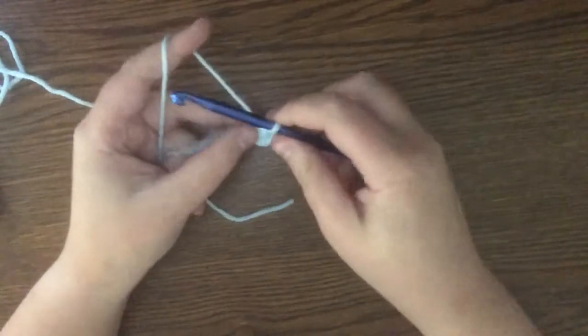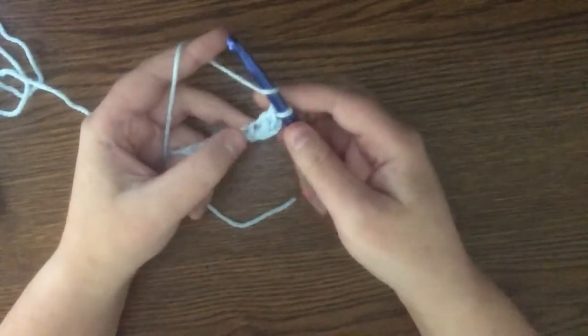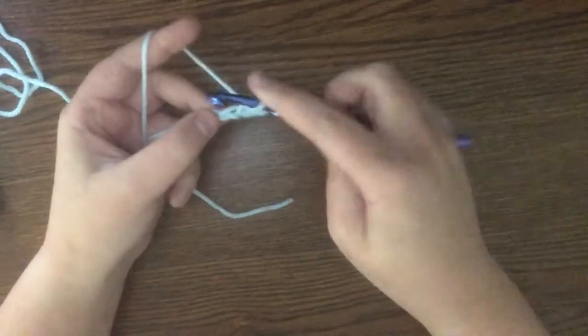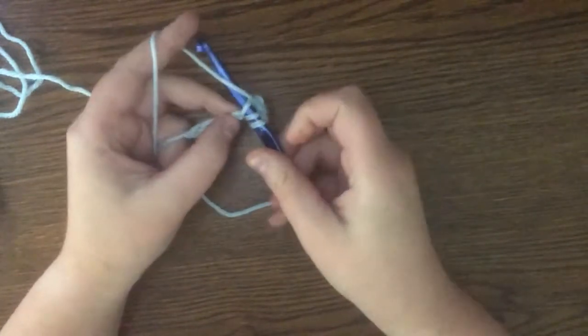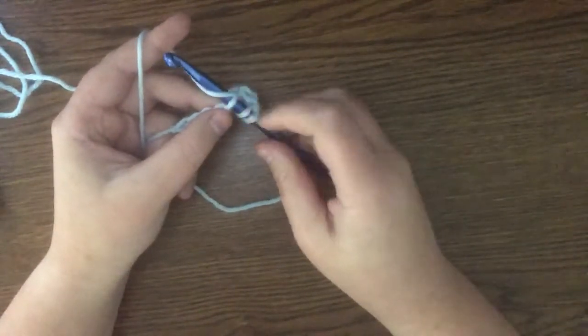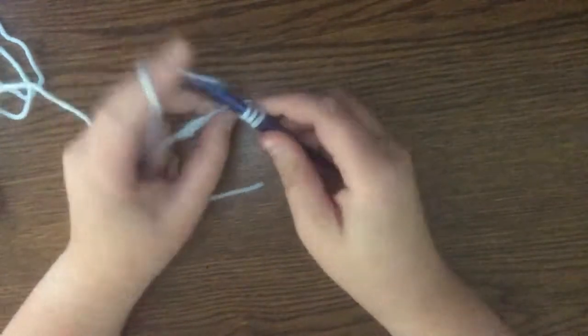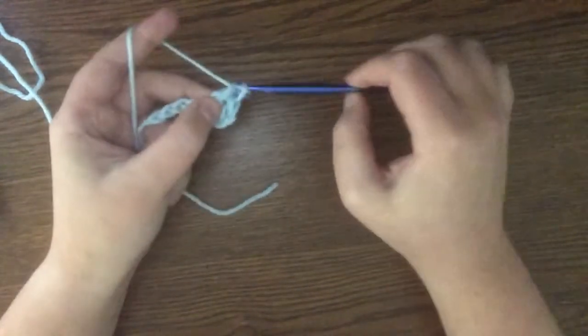I'm going to show you again. You're going to yarn over, insert your hook into the chain, yarn over again. There's three here. You're going to pull through one, two, two.